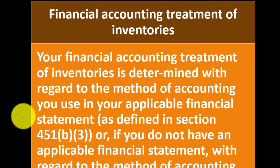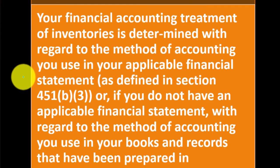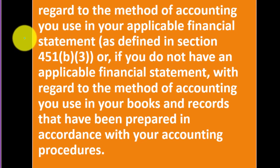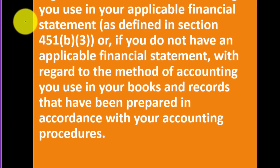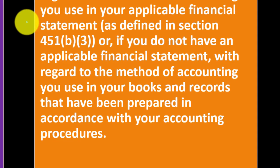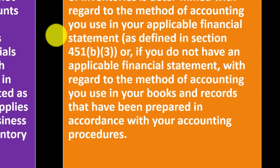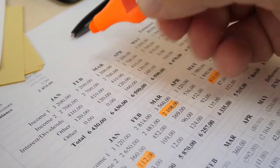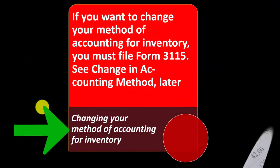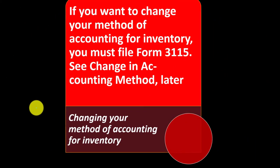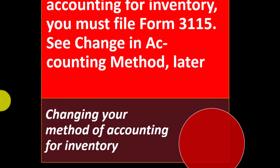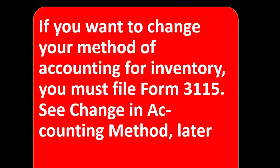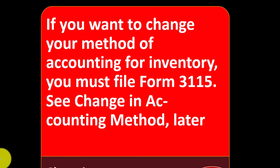Financial accounting treatment of inventories: your financial accounting treatment of inventories is determined with regard to the method of accounting you use in your applicable financial statement as defined in Section 451(b)(3), or if you do not have an applicable financial statement, with regard to the method of accounting you use in your books and records prepared in accordance with your accounting procedures. Generally you want your tax treatment to line up to your bookkeeping treatment — and if you're required to make financial statements, your financial statement treatment. Changing your method of accounting for inventory: if you want to change your method, you must file Form 3115.